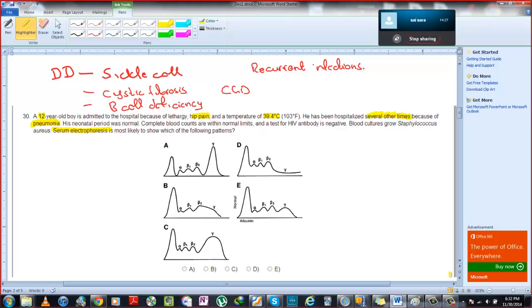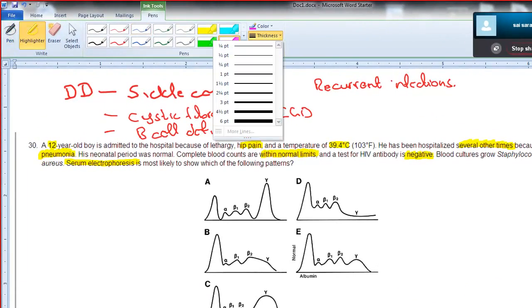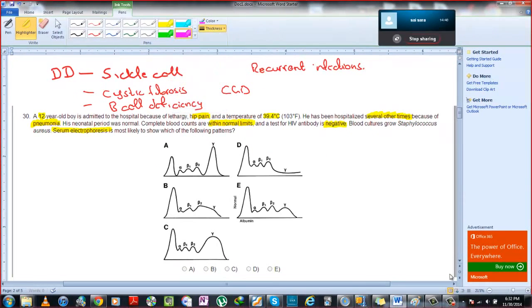His neonatal period was normal. Fair enough. Complete blood count within normal levels. Good. And a test of HIV antibodies is negative. Blood cultures grow staph aureus. Interesting. Wonderful. So now tell me, does sickle cell, if the patient has sickle cell crises, will it grow? What is the connection between sickle cell and hip pain? Salmonella. Okay, but this guy is growing staph aureus. Could it be a possibility?